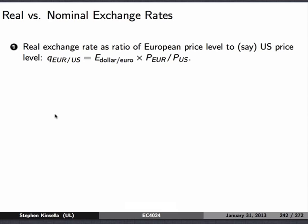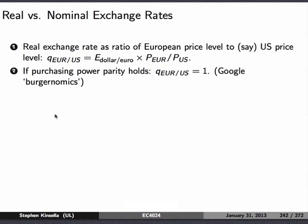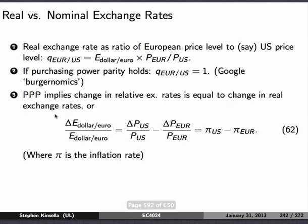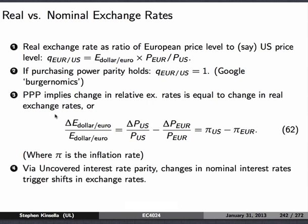Real versus nominal exchange rates tries to take account of price changes. You get this Q measure, which is just the exchange rate of dollars for euros, multiplied by the price level in euros and the price level in dollars. If purchasing power parity held — in other words, if one burger in Ireland was the same price as a burger in the US, multiplied by the exchange rate — then Q would equal 1. PPP implies that the change in the relative exchange rates is equal to inflation. So if you take equation 62, the change in the exchange rate of the dollar or euro is just the percentage change in the price level in the US minus the percentage change in the price level in Europe, which is just the difference in inflation. By uncovered interest parity, changes in nominal exchange rates trigger shifts in exchange rates.